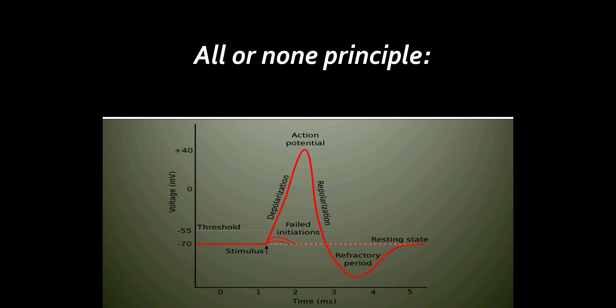All or none principle: A stimulus below threshold will not result in contraction. A threshold stimulus will result in contraction leading to maximum force. Higher stimulus will not increase the force of contraction — that is, a muscle fiber either contracts fully or not at all. This is the all or none principle, and all types of muscle fibers and nerve fibers obey this law.